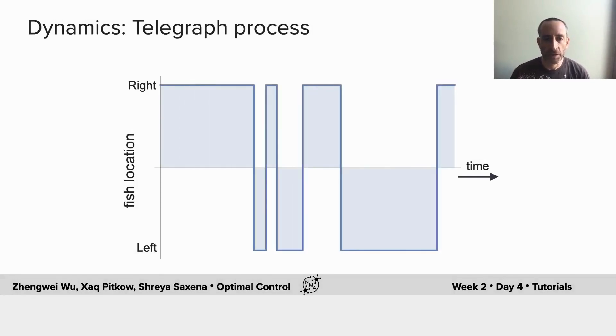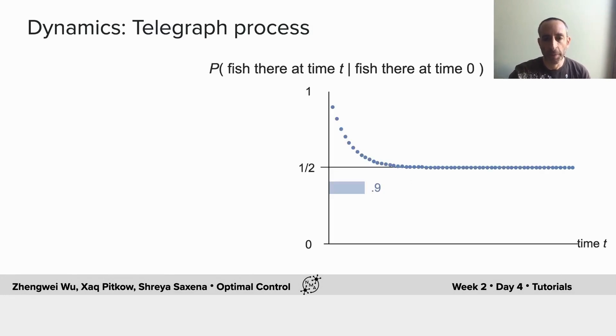What you should have seen is the fish swimming back and forth between the left and the right side with some typical duration, although it's a random process. And that random process typically stays on one side for a number of time steps that depends on the probability of staying for one time step.